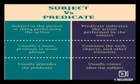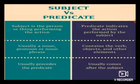Subject vs. Predicate: The subject is the person or thing performing the action. The predicate indicates the action performed by the subject. A subject is usually a noun, pronoun, or noun phrase.